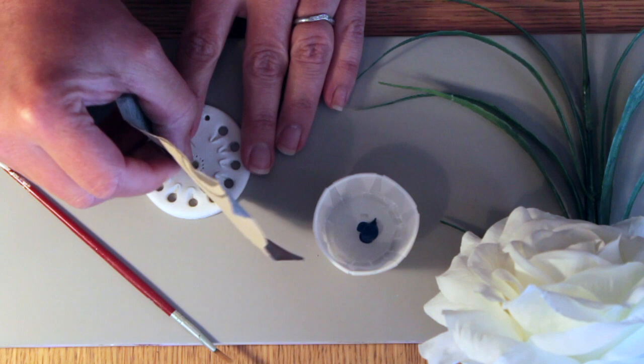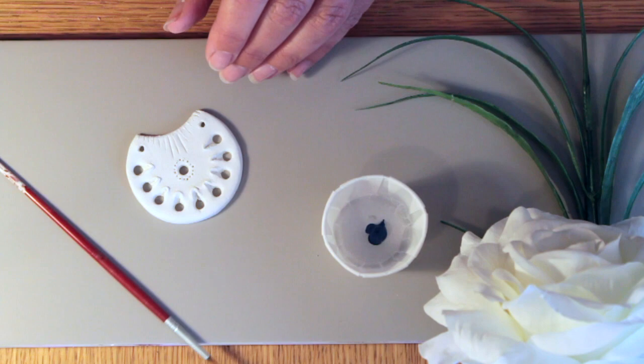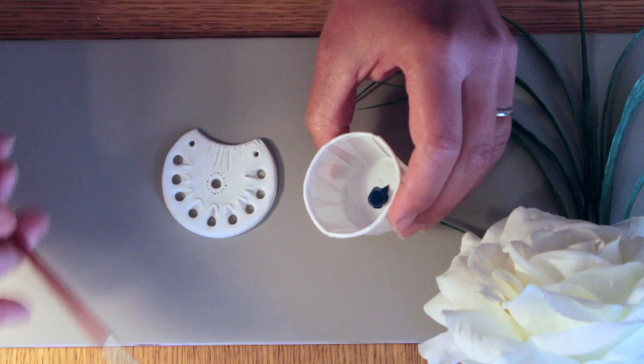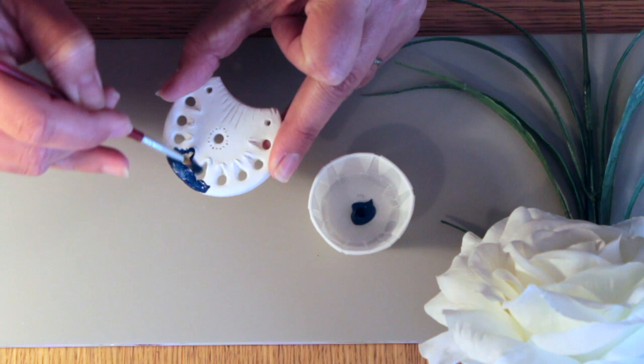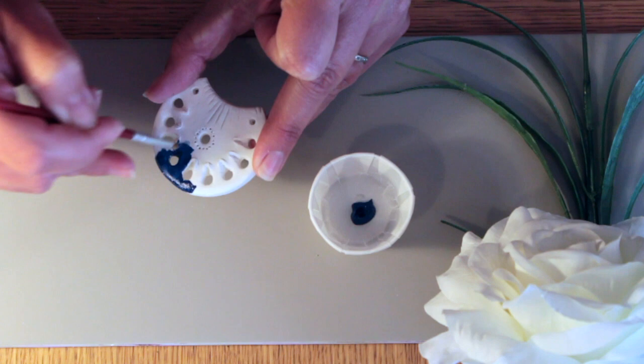And then just fold the sandpaper over and just get in any of the grooves there. And then we just brush away any of the bits of dust because we don't want that in our paint. And so then just paint. We're going to paint it with one first coat of acrylic paint and then we'll paint it with a second coat just to make sure we get that nice solid color.